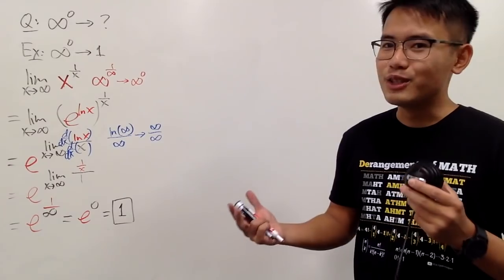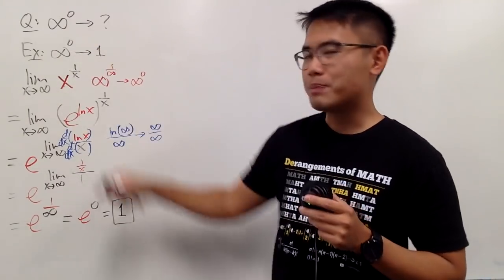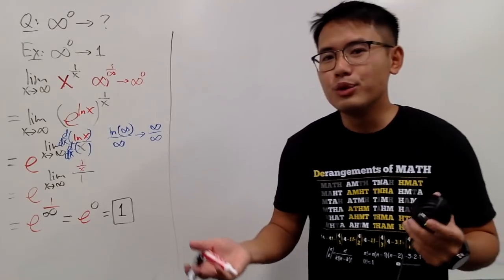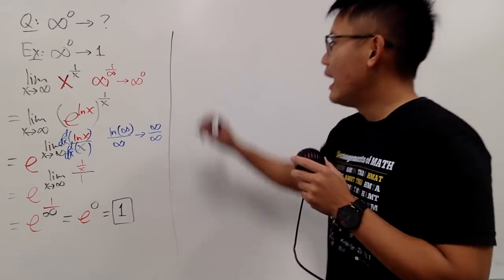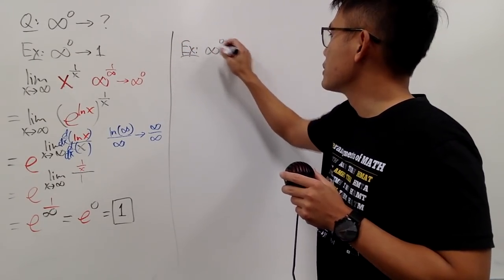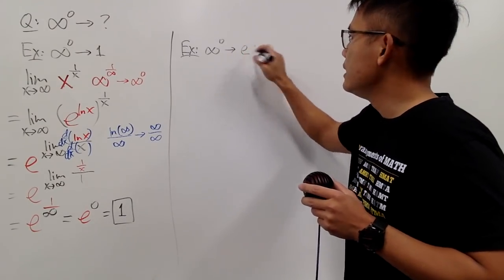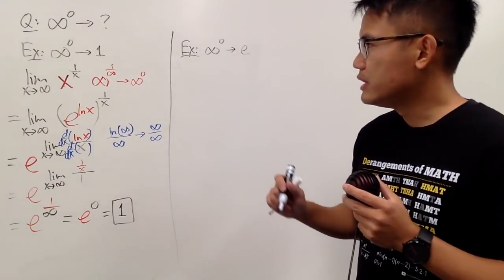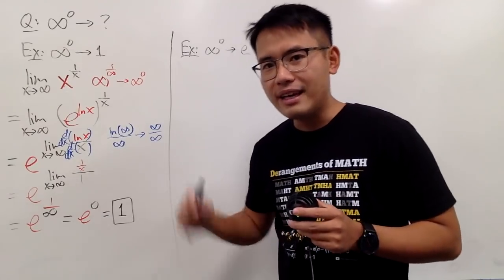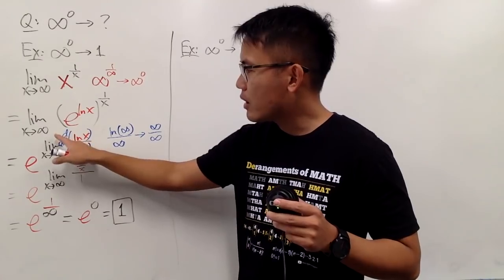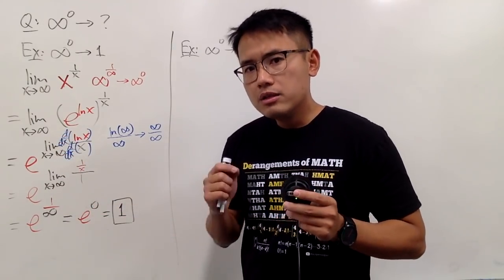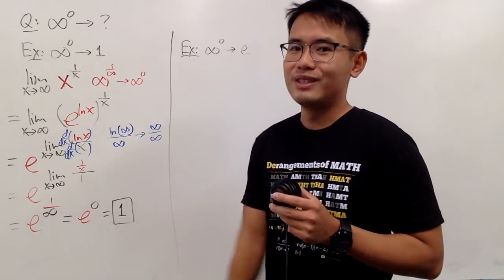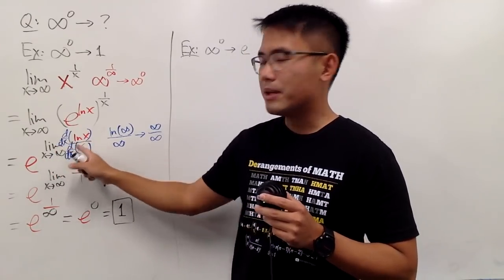I don't like this example so much because it gives a false belief that infinity to a zero power is always 1. The reason we ended up with 1 is that the limit of the exponent happened to be zero, giving us e to the zero's power. If I make sure the exponent limit is not zero, I won't end up with 1. I need to modify the function so that limit doesn't go to zero.